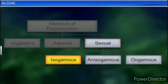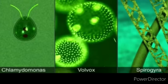In oogamous reproduction, female gametes are stationary and non-motile. Some commonly found green algae are Chlamydomonas, Volvox, Ulothrix, Spirogyra, Chara, etc.